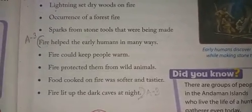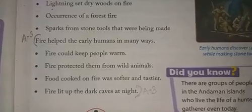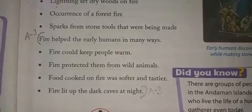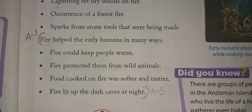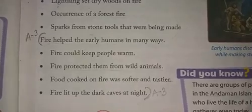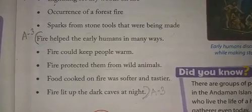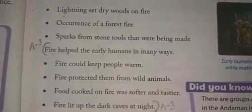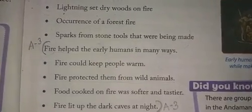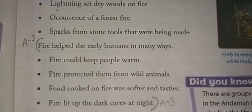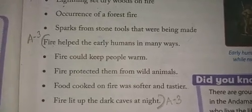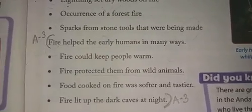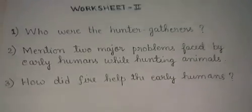Whatever the origin, fire helped early humans in many ways. Number one, it kept the people warm. Number two, it protected them from wild animals. Number three, food cooked on fire was softer and tastier. Number four, fire lit up the dark caves at night. With this we end today's lesson, and the remaining portion will continue in the next video.